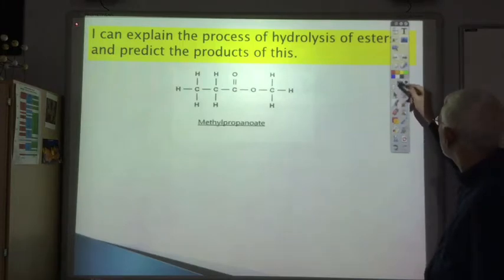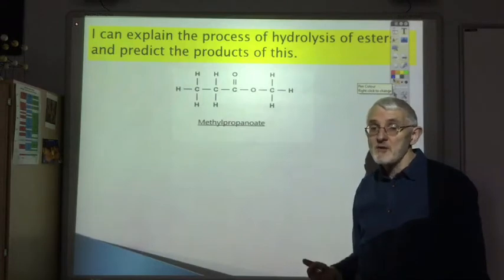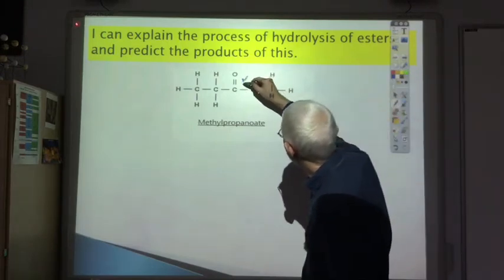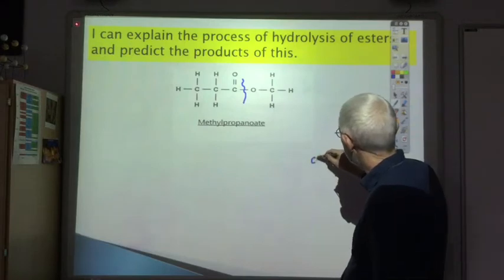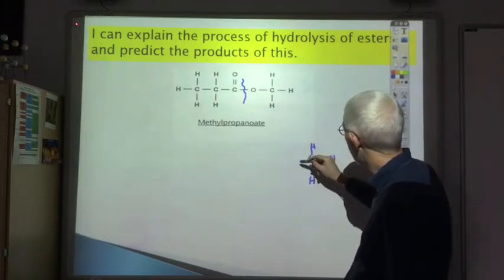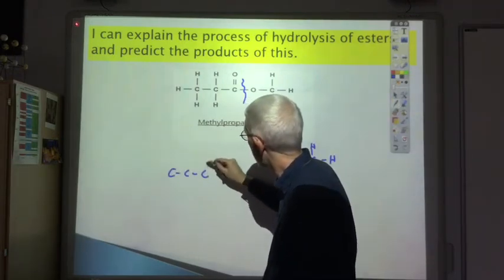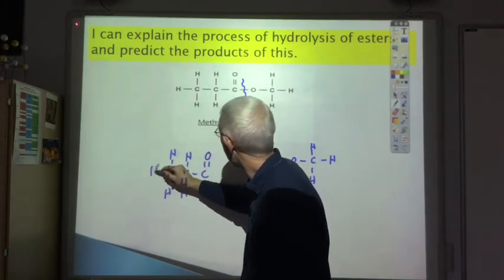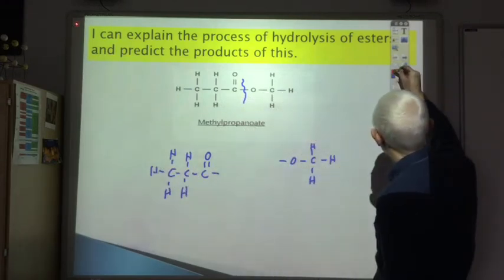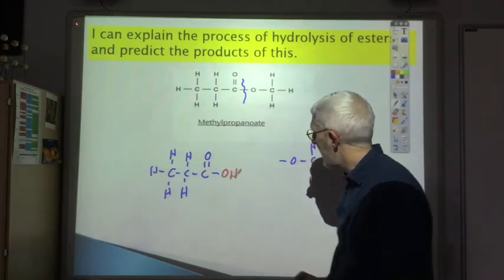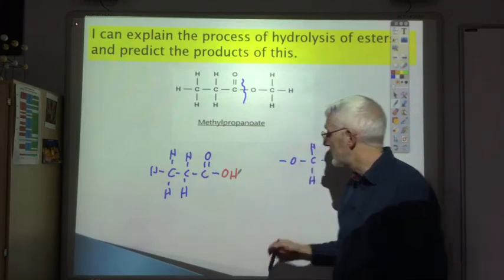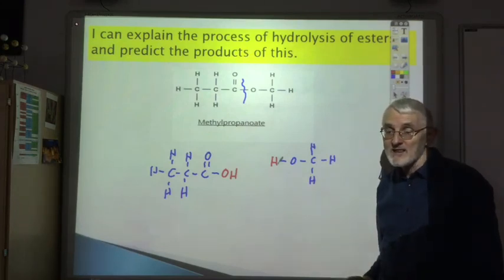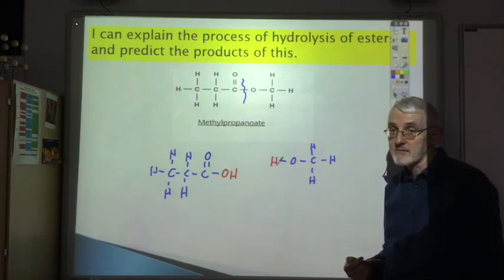Here's another example: methyl propanoate. From the name you can work out the products would be methanol and propanoic acid. If you split it at the ester link, one fragment gets an OH back to make propanoic acid, and the other gets an H back to make methanol. Those are the main learning outcomes you should understand for esters.